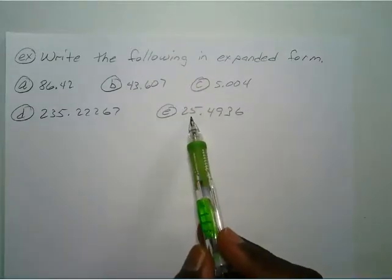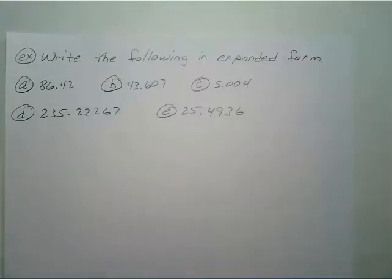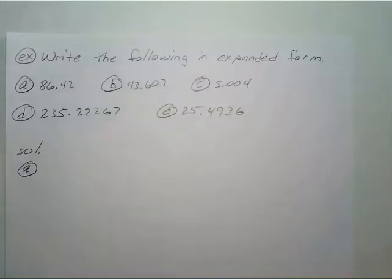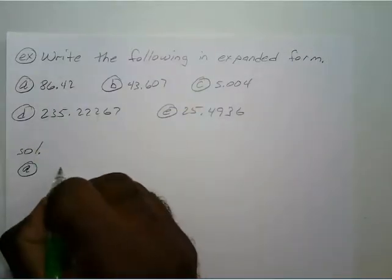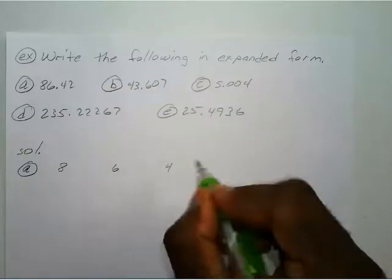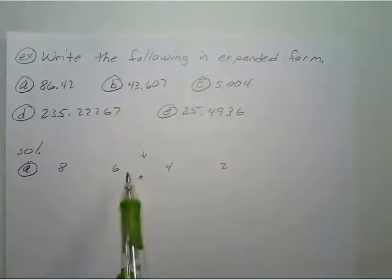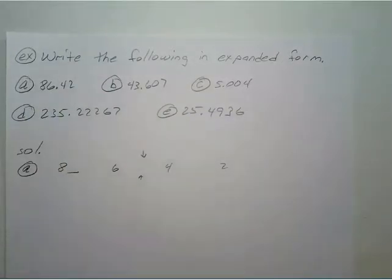And we have 25 and 4936 ten-thousandths. Let's start with problem A. Remember your first step — write down each digit with some space between them. So you have 8, 6, 4, and 2, and your decimal is between the 6 and the 4. For the 8, you have one space until you hit the decimal, so you write a space there.